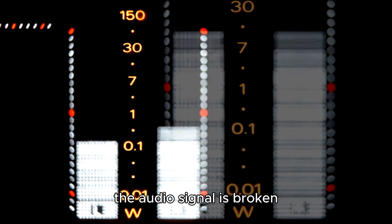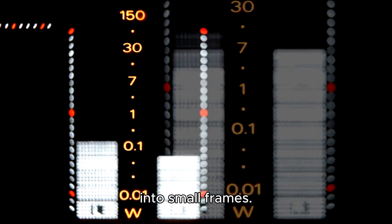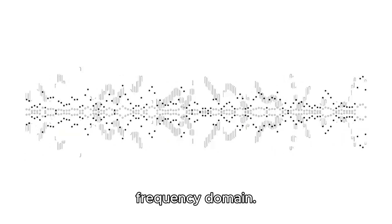Here's how it works. First, the audio signal is broken into small frames. Then, a process called Fast Fourier Transform converts the sound from the time domain to the frequency domain.